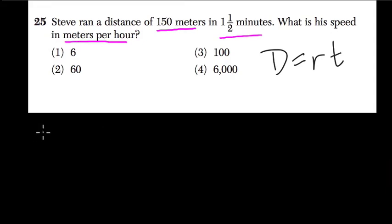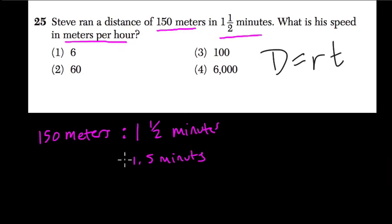So here we set up a ratio: 150 meters for every one and one-half minutes. If I set that up, that'll be 1.5 minutes, of course.